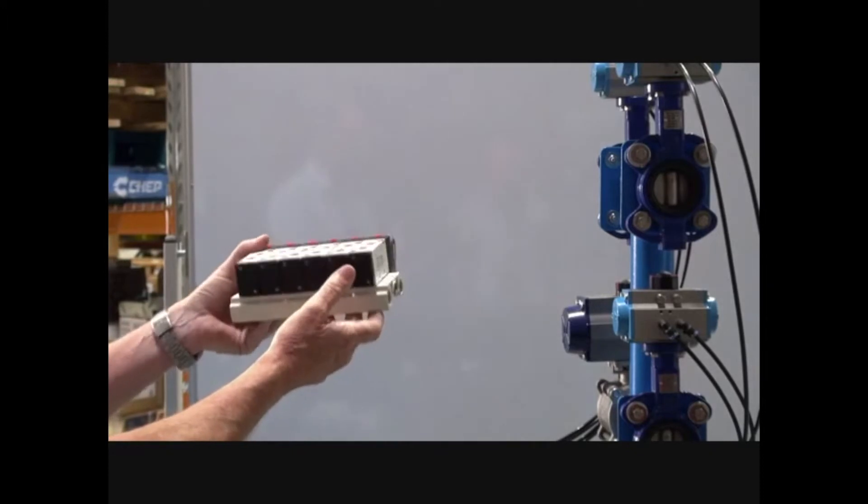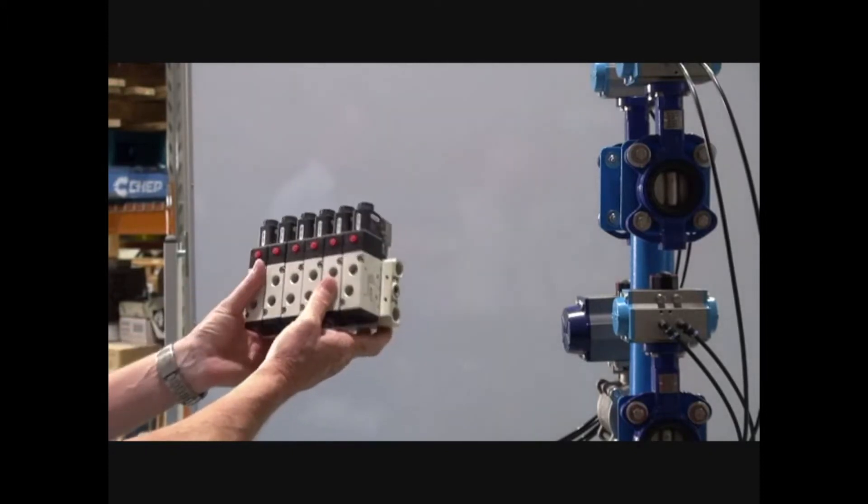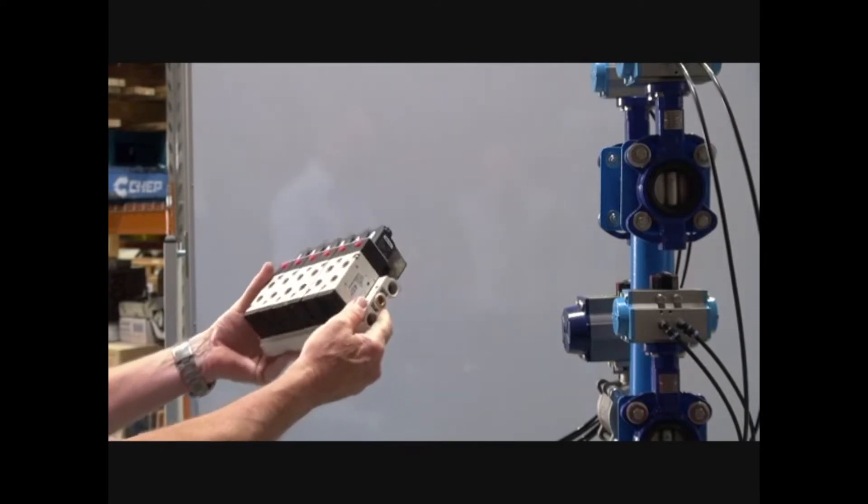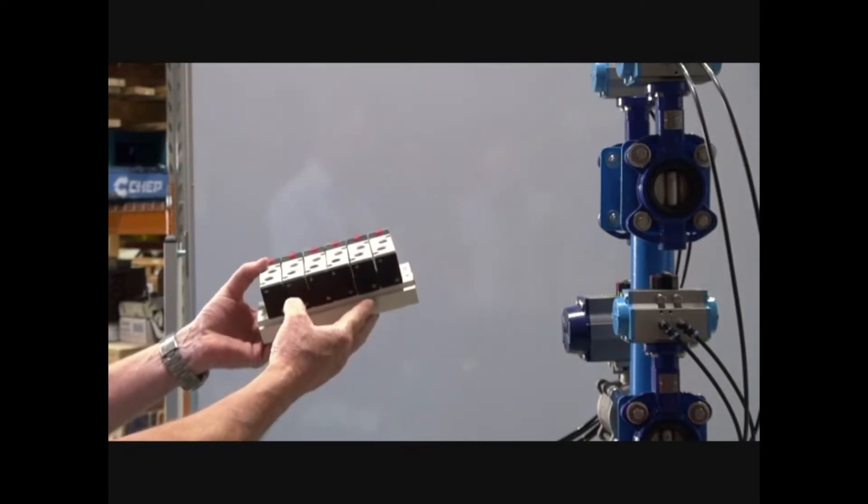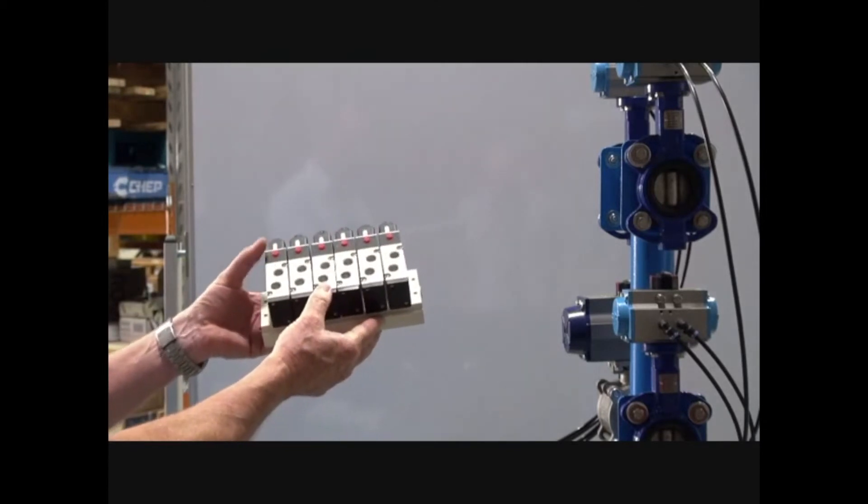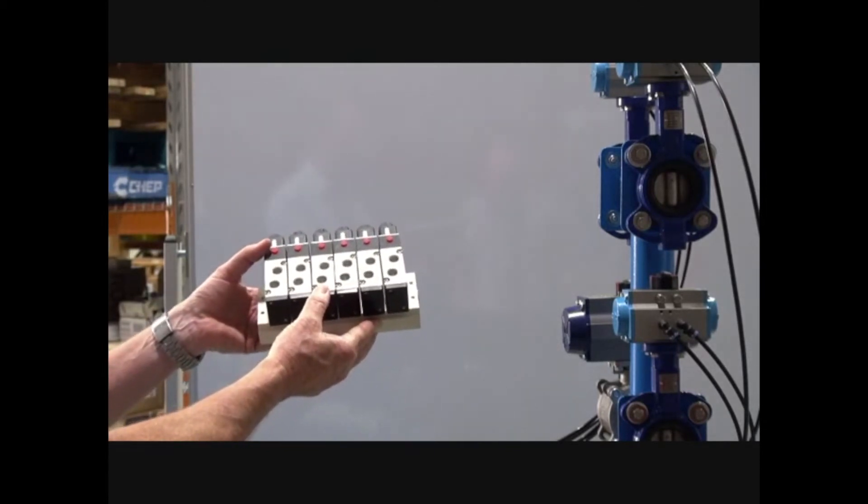Manifolds for valves. We have ranges of valves that can be mounted directly onto a sub-base manifold in multiples from 2, 3, 4 up to 12 and sizes from 1/8 BSP 3 to 1/2 inch.